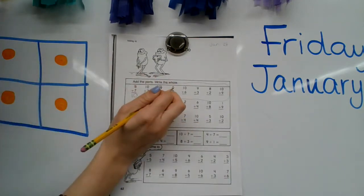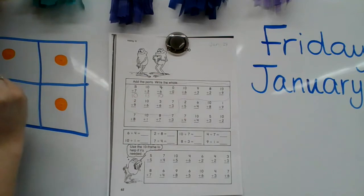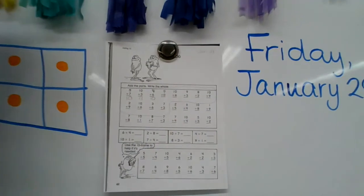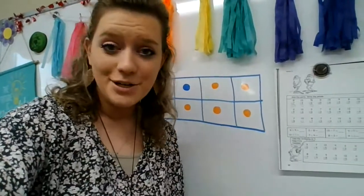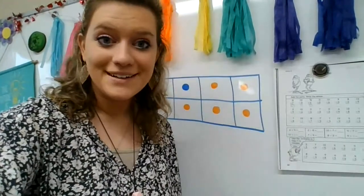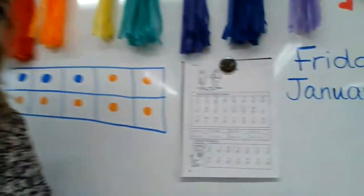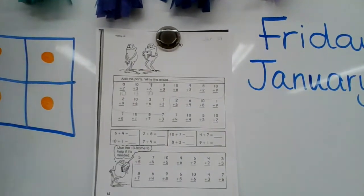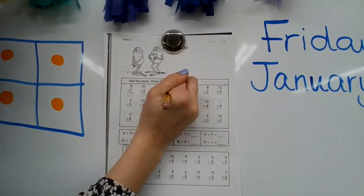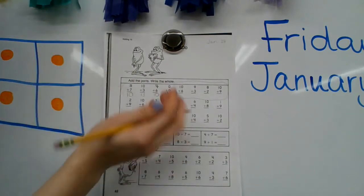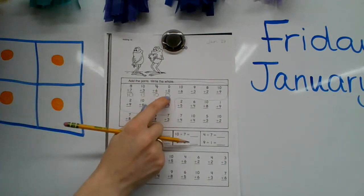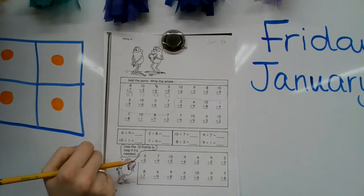How about this one? Zero plus zero. What? If I have nothing and I add nothing to it, what's left? Nothing. Zero. Zero is the answer. Zero plus zero equals zero. So remember, this is called adding our parts and the whole is the answer that we're getting.